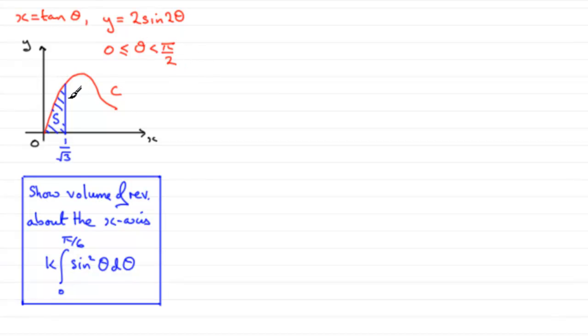And we've got this shaded area S, going from x is 0 to x is 1 over root 3. And this area is spun through 2 pi radians, the equivalent of 360 degrees, about the x-axis. And we've got to show that the volume of revolution about the x-axis is given by this integral, where k is a constant.